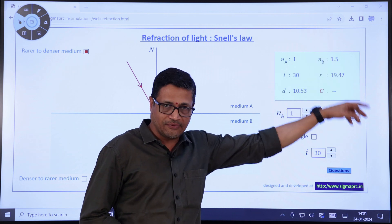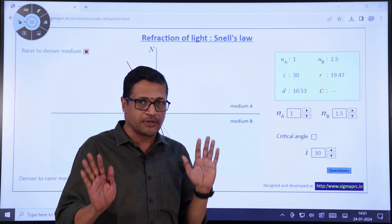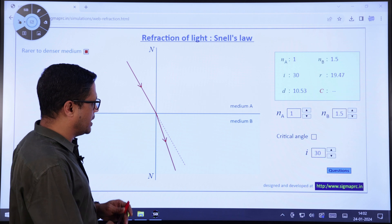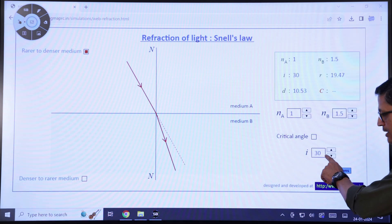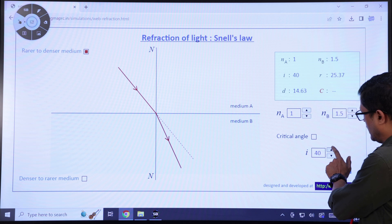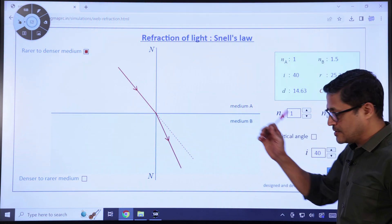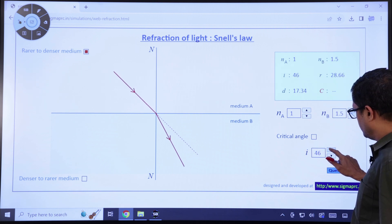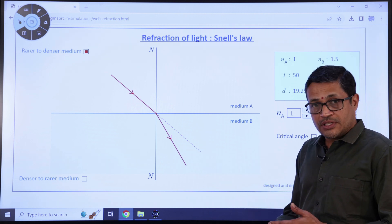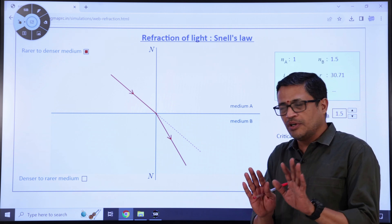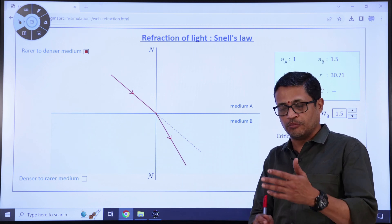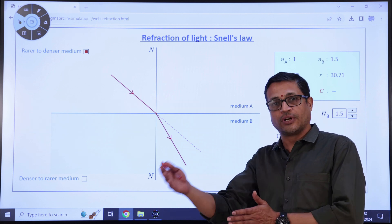What happens if we increase or decrease the angle of incidence? Here is the button that controls the angle of incidence. If I increase it to 40 degrees, you see the deviation has also increased. At 50 degrees, the deviation has increased more. The amount by which light deviates depends not only on the refractive indices but also on the angle of incidence, which is a very important parameter for your board exams and for advanced ray optics.